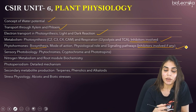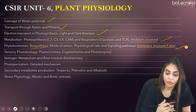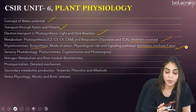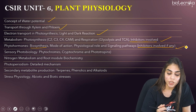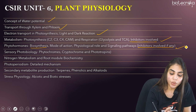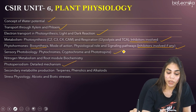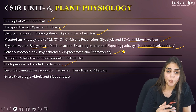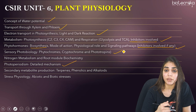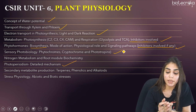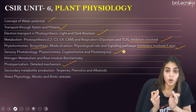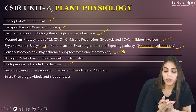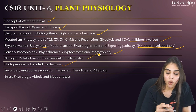The next is sensory photobiology — focus on phytochromes, cryptochromes, and phototropins, along with photoperiodism and the detailed mechanism of these pathways. Also cover nitrogen metabolism, which is a very vast and important topic. Learn how root nodules are formed in plants — the genes involved, Nod factors, and nodulin genes.